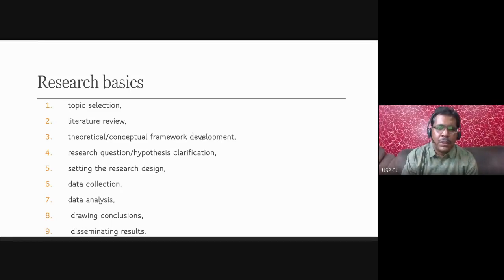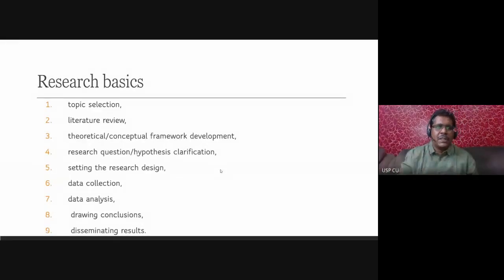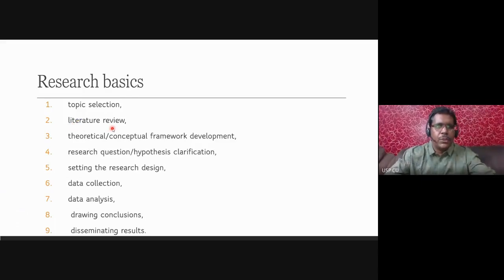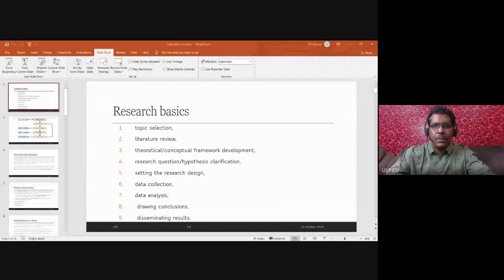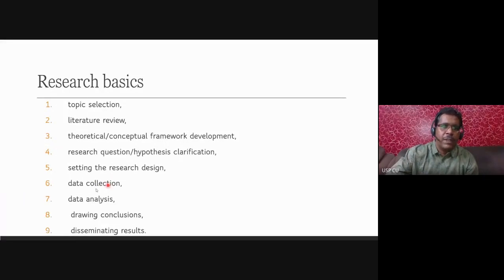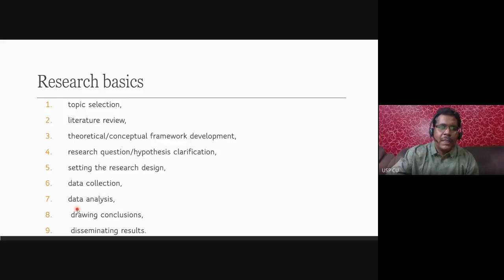We know about these basics of research, and the entire research process can be divided into nine steps. It begins with topic selection, then literature review, then the theoretical conceptual framework — a very important part of research. Without the theoretical framework it makes little sense. Then we have research design, data collection, analysis, conclusions, and finally disseminating the results.